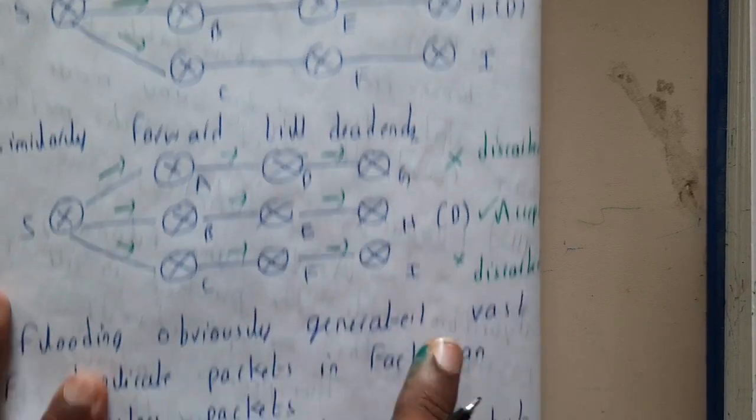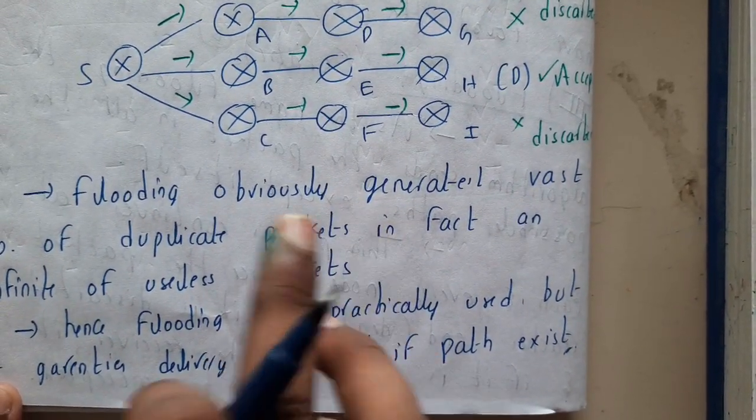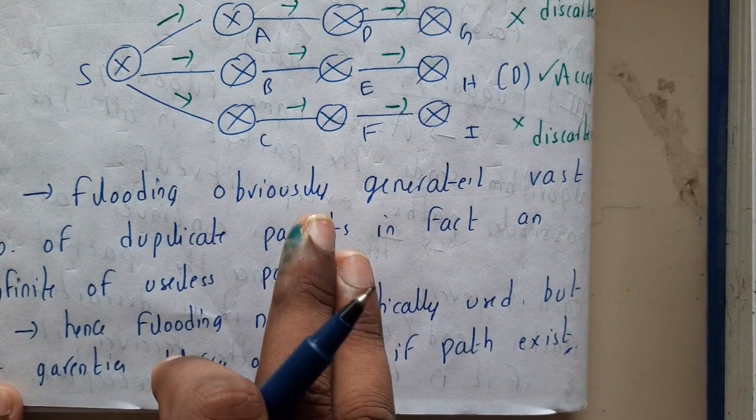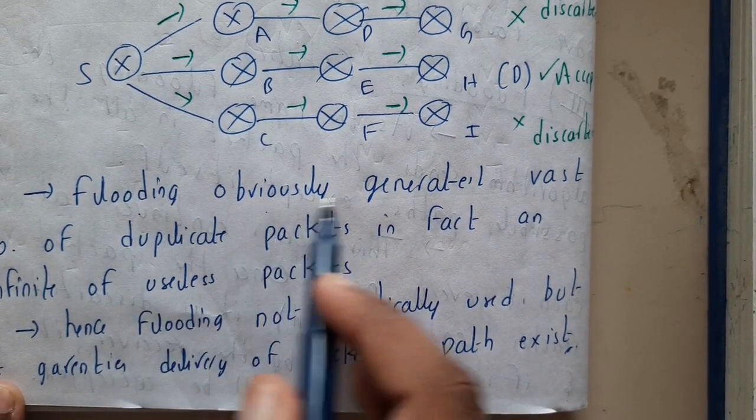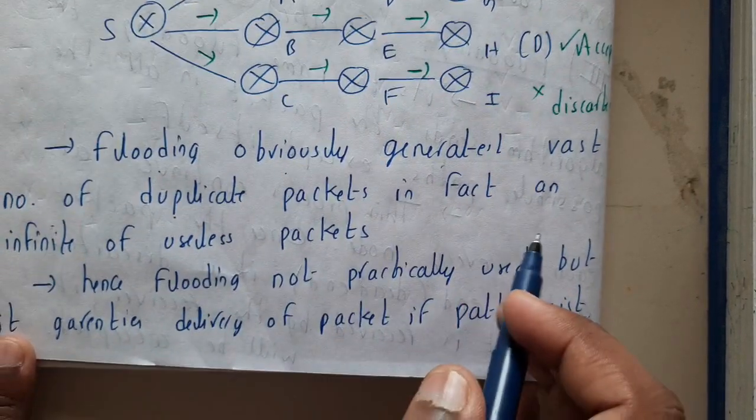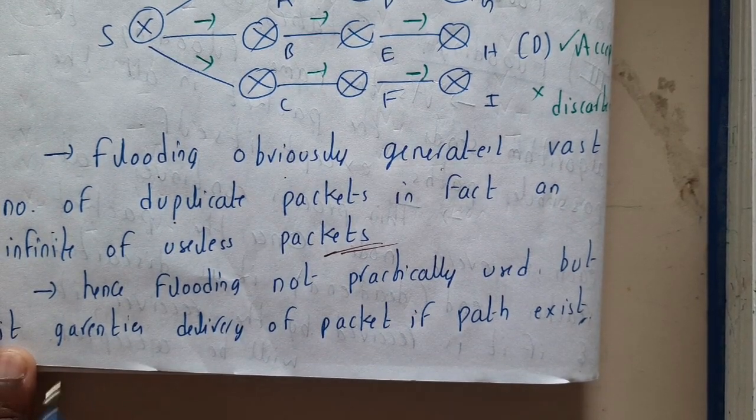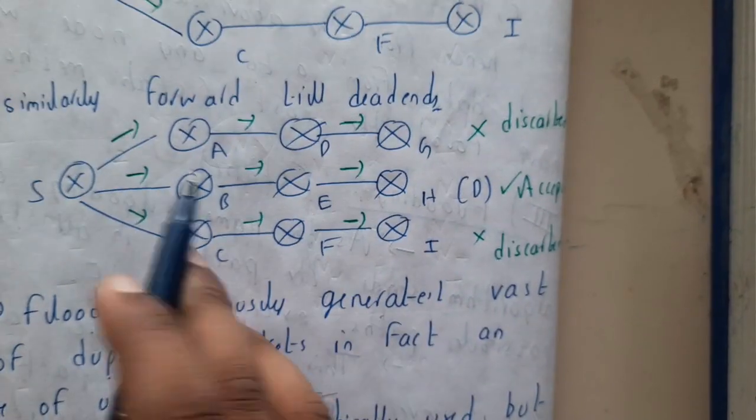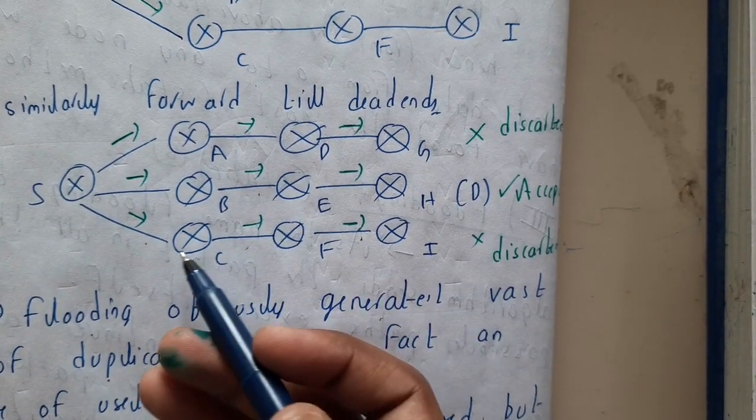Flooding obviously generates duplicate packets. The major disadvantage of flooding is it will generate duplicates. Flooding generates a vast number of duplicate packets, in fact an infinite number of useless packets. In this small example, one, two, three, four, five, six, seven, eight, nine packets have been generated.